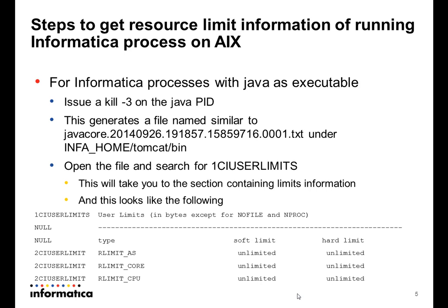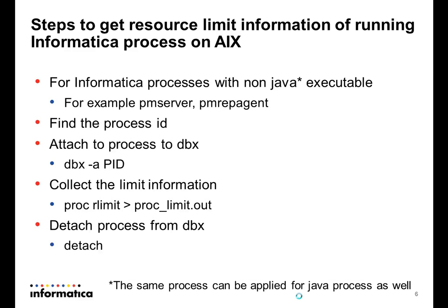Now let's look at what to do for a native (non-Java) executable process, such as PMServer or PMRepresent. Again, we need to find the process ID. Here we make use of the DBX utility or DBX debugger on AIX to collect the same information. The steps are: find the process ID, attach the process to DBX, collect the limit information (you can redirect it to a file), and then detach from DBX. It is important to detach — if you don't detach, the process will be hung inside DBX. So detaching is required once the needed information is collected.